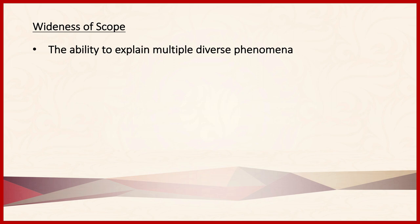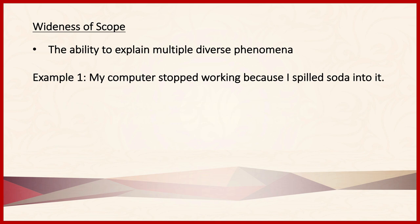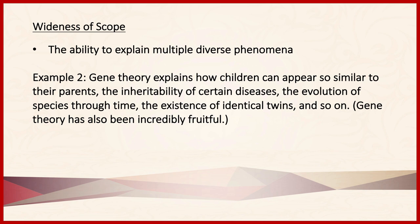Next we have wideness of scope. To say that a hypothesis has wideness of scope is to say that it can explain multiple diverse phenomena. There are lots of explanations that don't explain lots of different things — for example, my computer stopped working because I spilled soda into it. Compare that to gene theory, which explains how children can appear similar to their parents, the inheritability of certain diseases, the evolution of species through time, and the existence of identical twins. Gene theory has wideness of scope and has been incredibly fruitful — not surprisingly, these two criteria often go hand in hand.